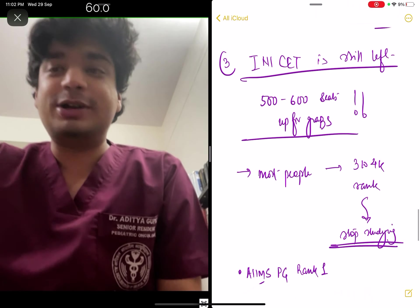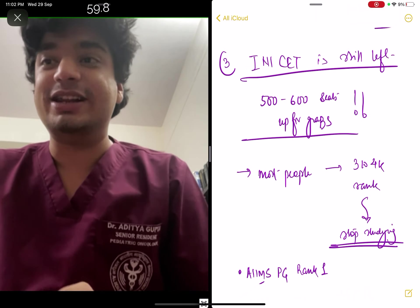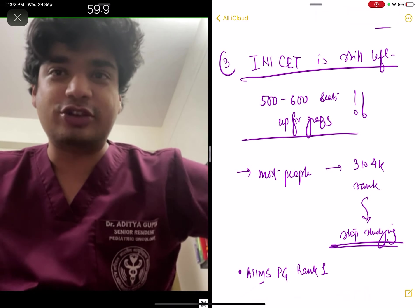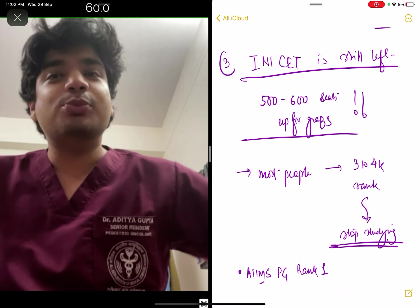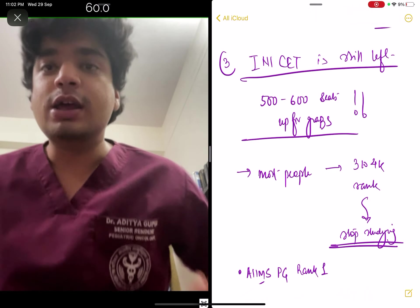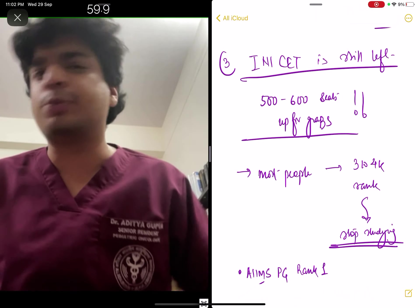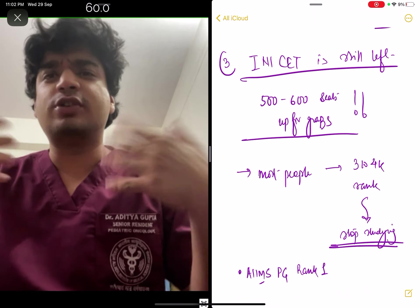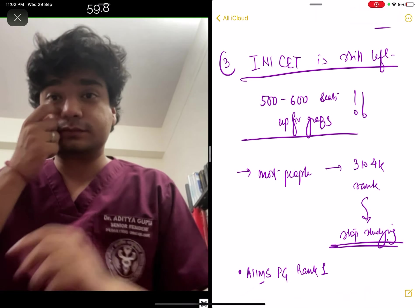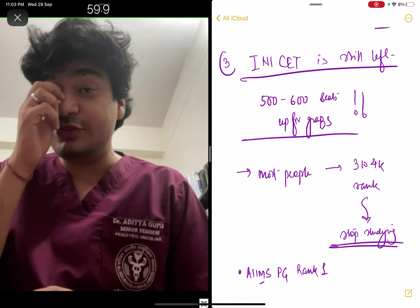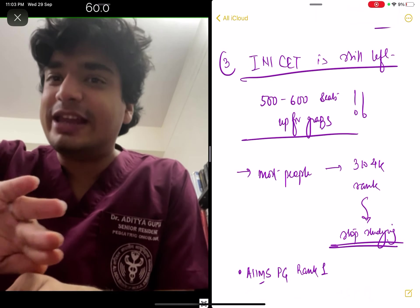Last but not the least, are INI SS. One month and a half month is still left. Good 500 or 600 odd seats are up for grabs, do not squander this opportunity. What will happen is most people who are getting the top 4,000, 5,000 rank will stop studying now. They will absolutely stop studying, they will think they will get their branch. But most people will stop. This is your opportunity to go up. Even if you had gotten an average rank or not so good rank, if you push it further now, you can get away.